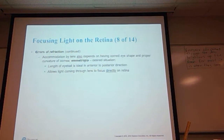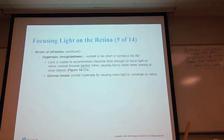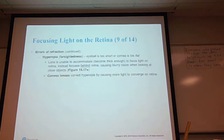Accommodation by the lens can also depend on having correct eye shape and proper curvature of the cornea. Emmetropia is the desired situation — the length of the eyeball is ideal in the anterior-to-posterior direction and allows for light coming through the lens to focus directly on the retina. Hyperopia, or farsightedness — the eyeball is too short or the cornea is too flat. In this case, the lens is unable to accommodate; it can't get thick enough to focus the light on the retina. Instead it focuses behind the retina, causing blurry vision when looking at close objects.